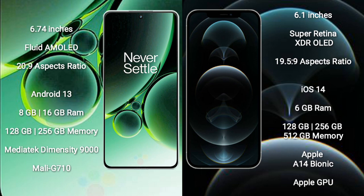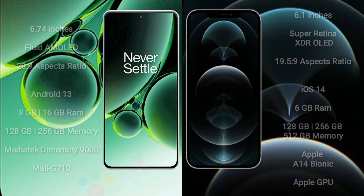iPhone 12 Pro comes with 6GB RAM and 128GB to 512GB internal storage. It is powered by the Apple A14 Bionic processor with Apple's integrated GPU.